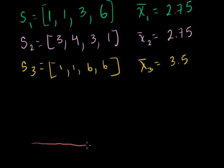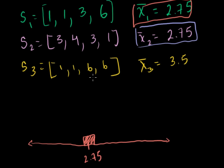I plot this all on a frequency distribution. My first sample mean was 2.75, so I plot that once. The next time I also got 2.75, so I got it twice. Then I got 3.5, so I plot that. And what I'm going to do is keep taking these samples — maybe 10,000 of them — and keep plotting the frequencies.